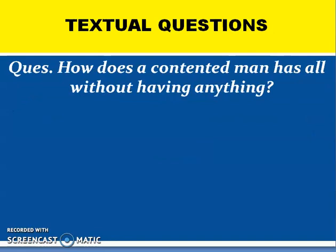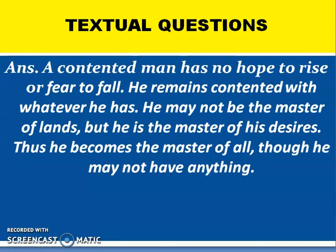The next question: how does a contented man have all without having anything? A contented man has no hope to rise or fear to fall. He remains contented with whatever he has. He may not be the master of lands, but he is the master of his desires. Thus he becomes the master of all, though he may not have anything.